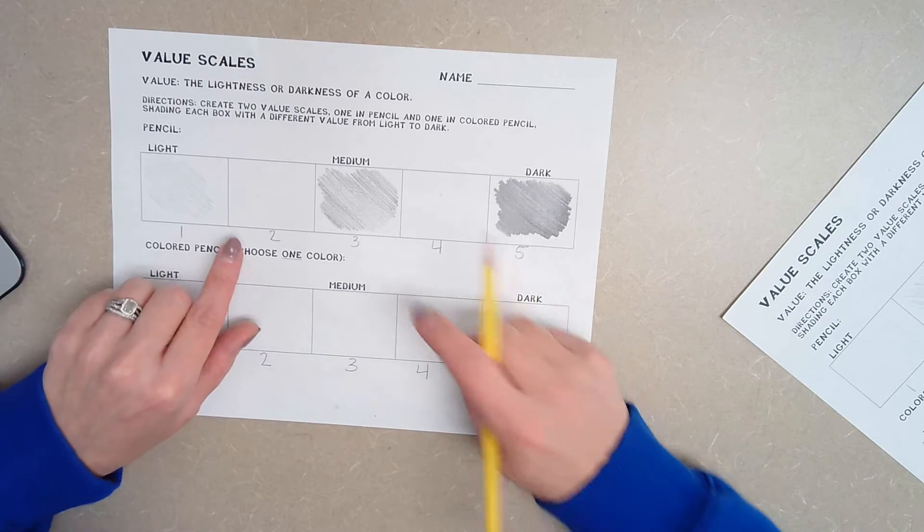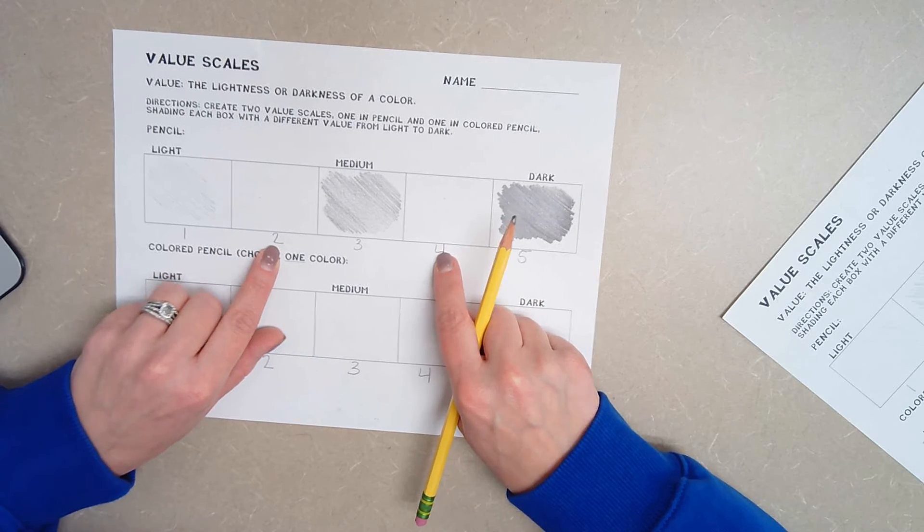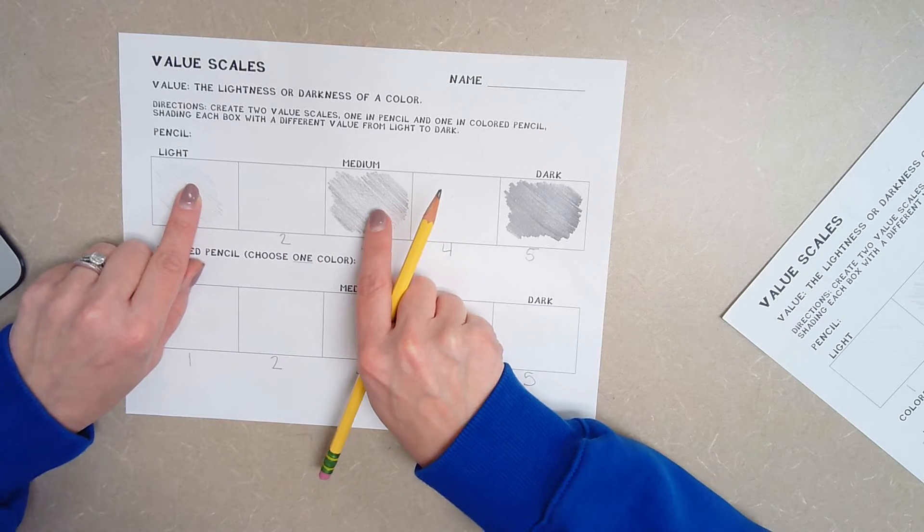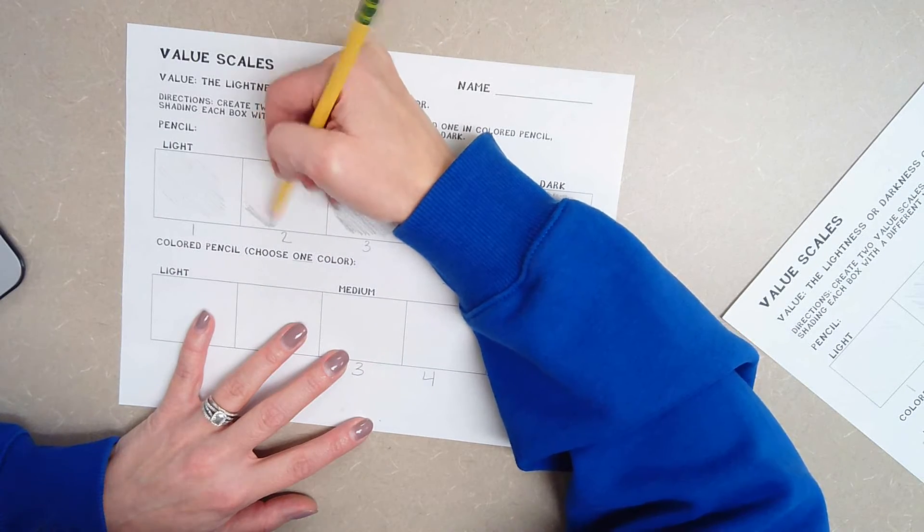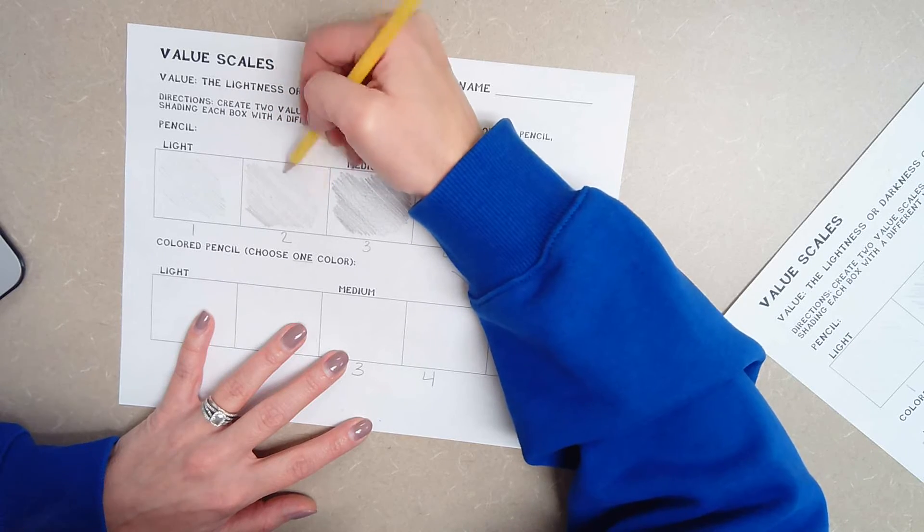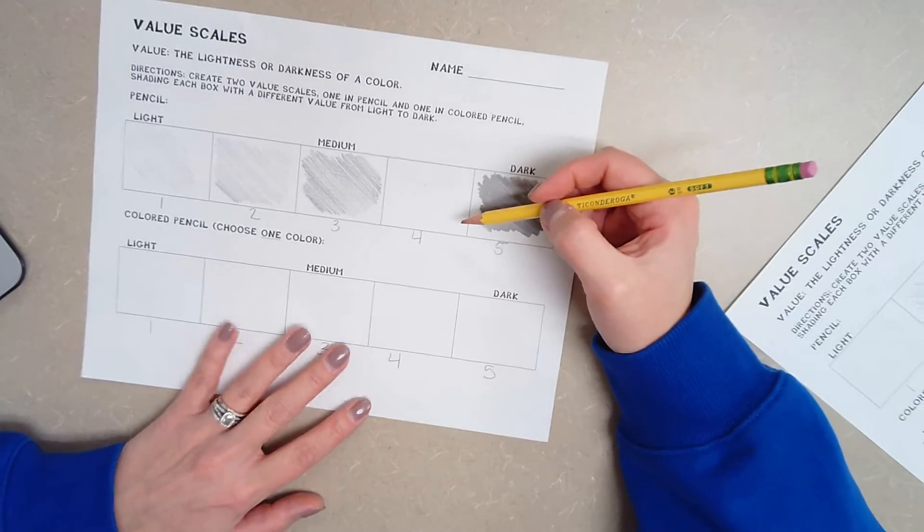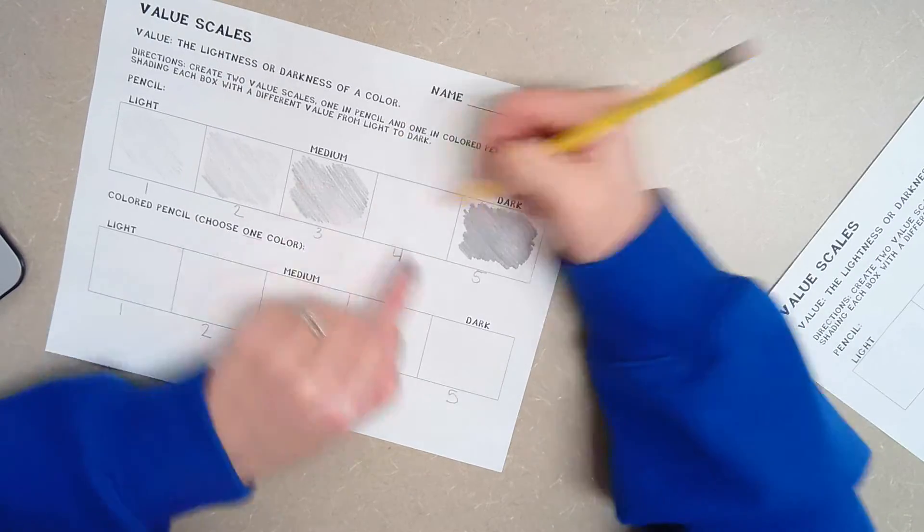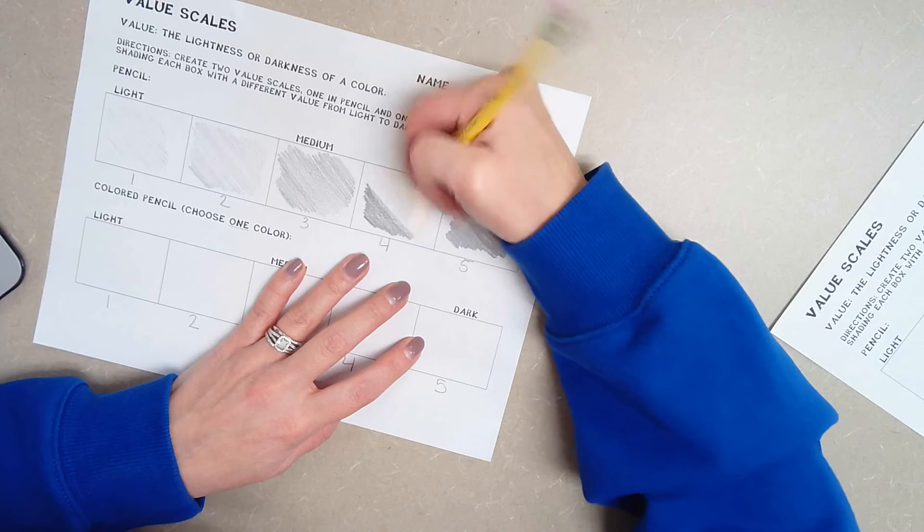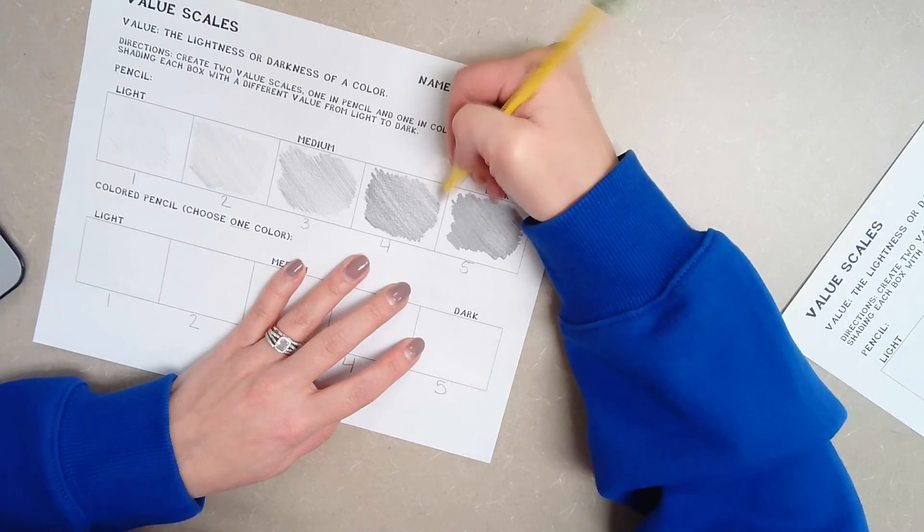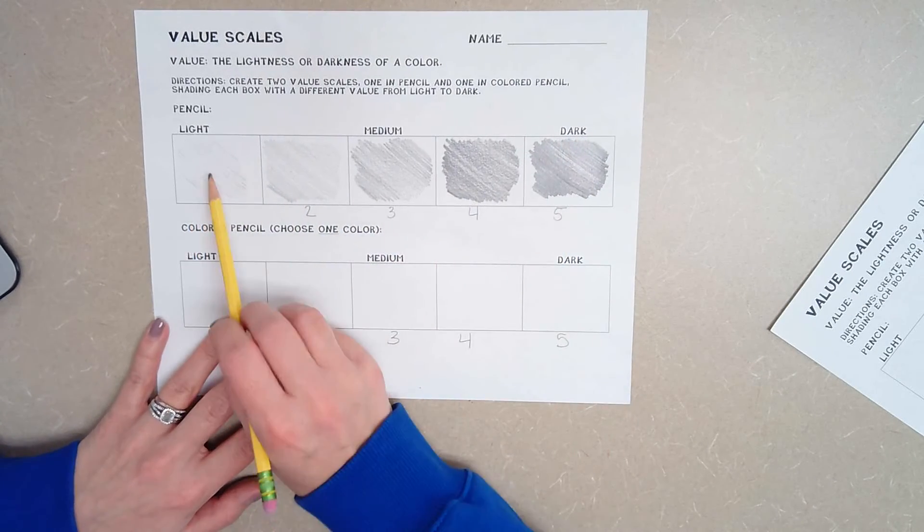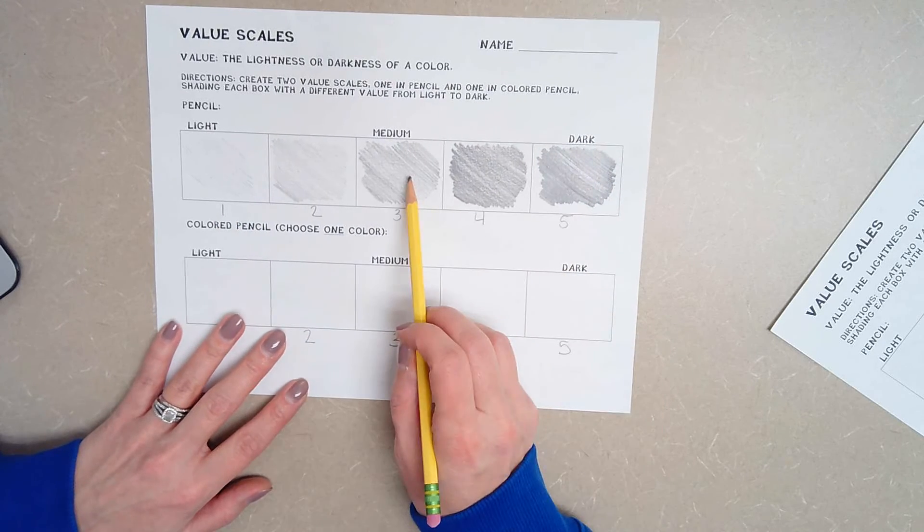So now all you have left is two and four. Number two is in the middle of really, really light and just kind of normal coloring. So I'm going to press a little bit harder than I would on number one, but not as hard as number three. And then number four, again, I have to be somewhere in the middle between a three and a five. So I'm going to press down hard, but not too hard. There we go. So now you can see my value scale. It goes from lightest to darkest. Number three is right there in the middle.